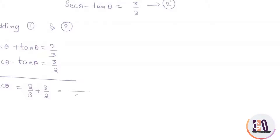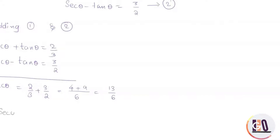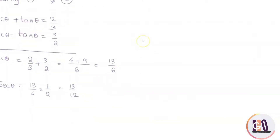The LCM is 6, giving 13 by 6. So 2 sec θ equals 13 by 6, which means sec θ equals 13 by 12. Therefore sec θ equals 13 by 12, which is greater than 0.